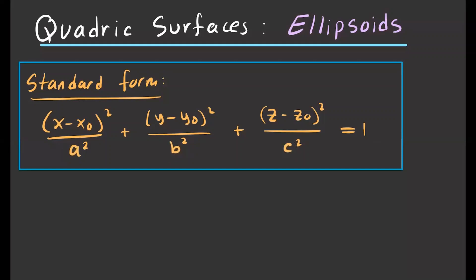How do we identify that this quadric surface is an ellipsoid? Note that all of these terms are positive and it's equal to 1 — that's one way to tell. This ellipsoid will have a center at (x-naught, y-naught, z-naught).